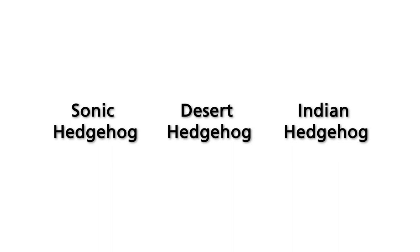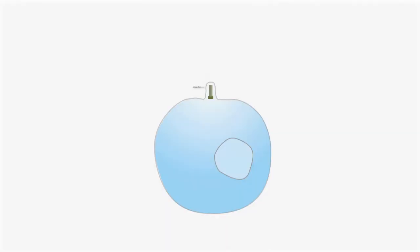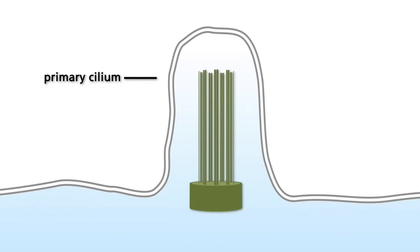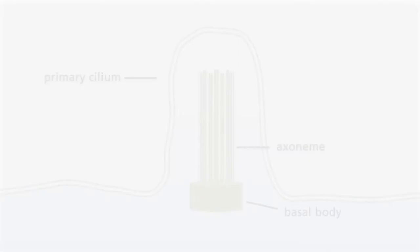In mammals, the hedgehog signaling pathway is closely associated with the primary cilium, a non-motile structure present on the apical pole of most vertebrate cells. Primary cilia contain a ring of nine pairs of microtubules, called axoneme. The ring is anchored in what is called the basal body.